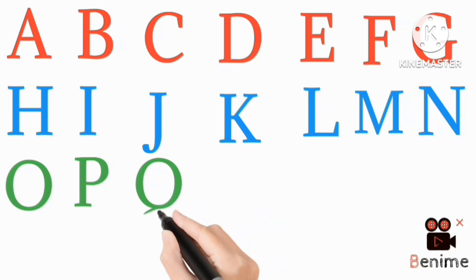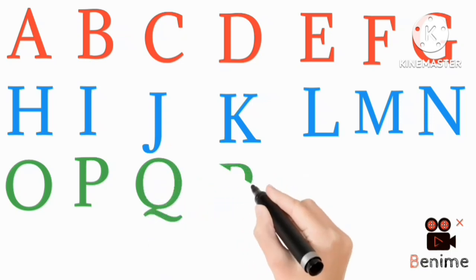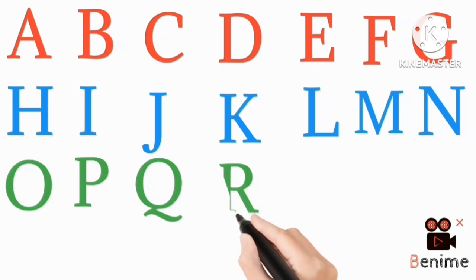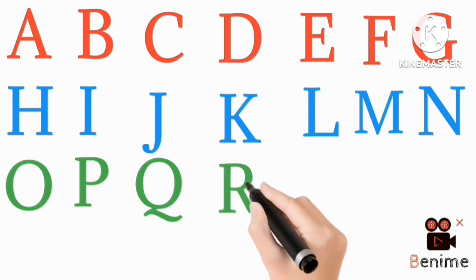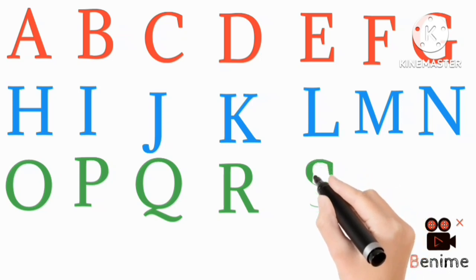Green color Q, Q for queen. Green color R, R for rabbit. Green color S, S for sun.